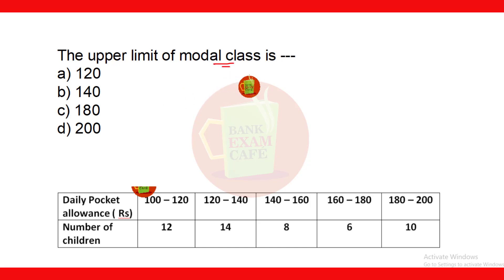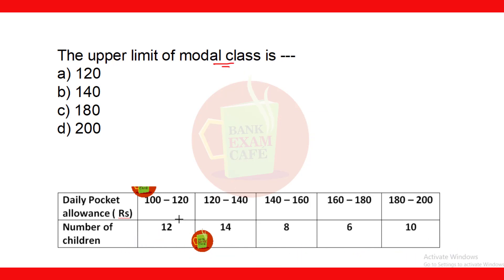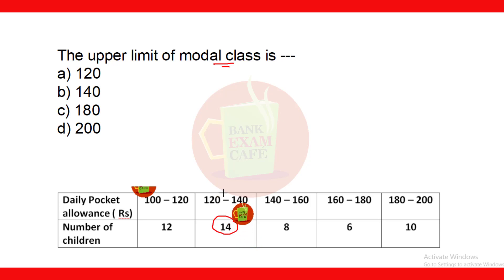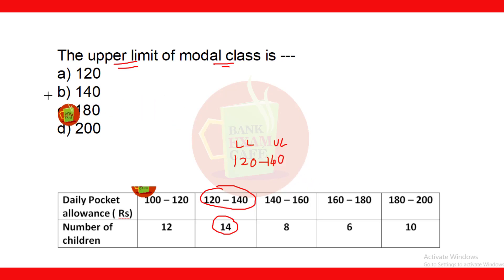The next question asks for the upper limit of the modal class. To find the modal class, we identify the highest frequency. The frequencies are 12, 14, 8, 6, and 10. The highest frequency is 14, so the modal class is 120–140. The lower limit is 120 and the upper limit is 140. Therefore, the upper limit of the modal class is 140, and option B is correct.